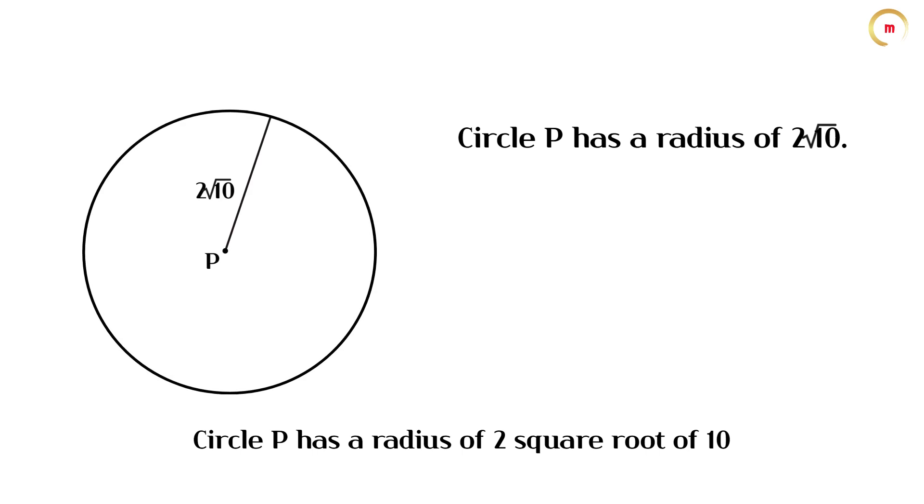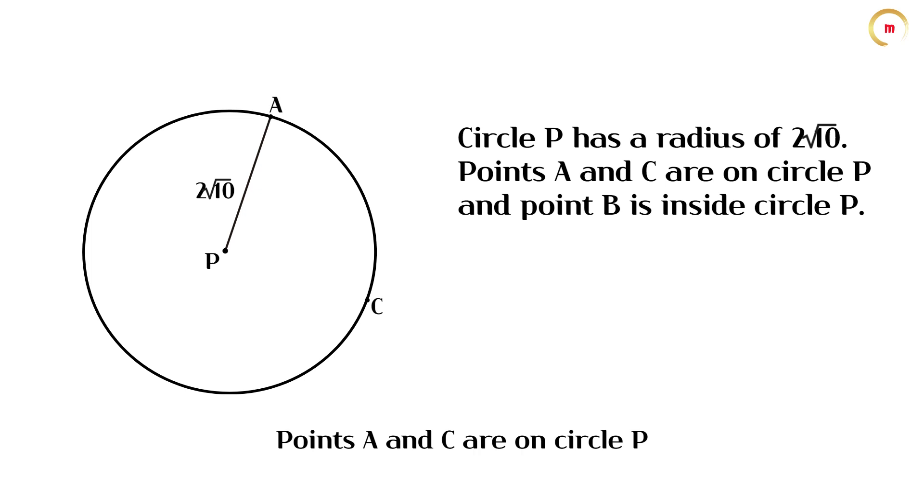Circle P has a radius of 2 square root of 10. Points A and C are on circle P, and point B is inside circle P.